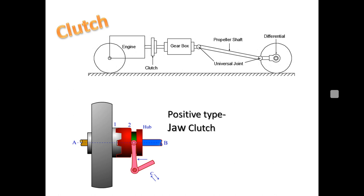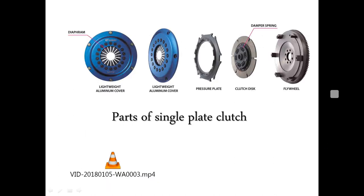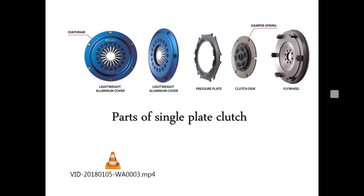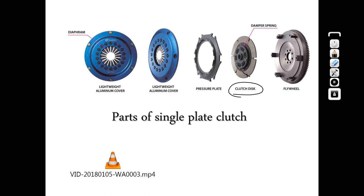We will now focus on the single plate clutch, which is a type of friction clutch where friction is the basic parameter to transmit power. The torque or power transmitting capacity of a friction clutch is proportional to the coefficient of friction between the contacting surfaces. In the single plate clutch diagram you can observe the flywheel, clutch plate with damper spring, pressure plate, and diaphragm spring. The clutch plate carries the frictional material and is also called the friction plate.